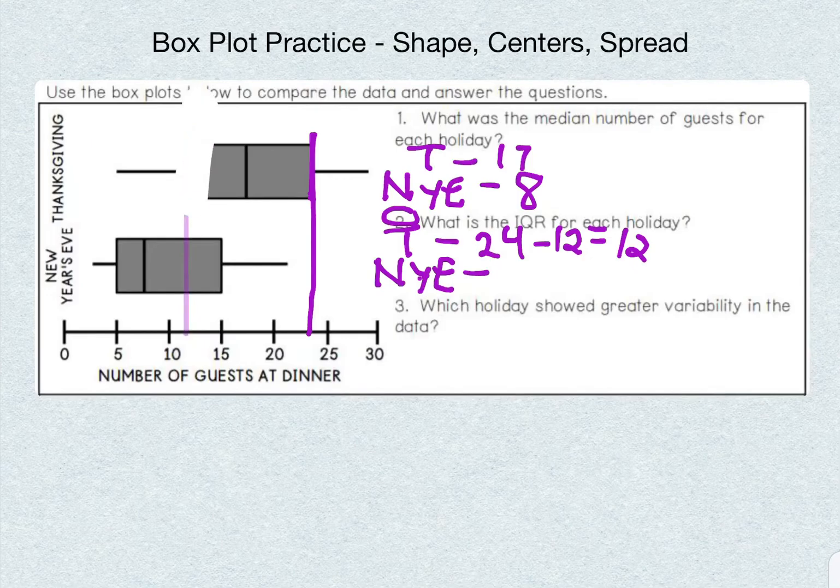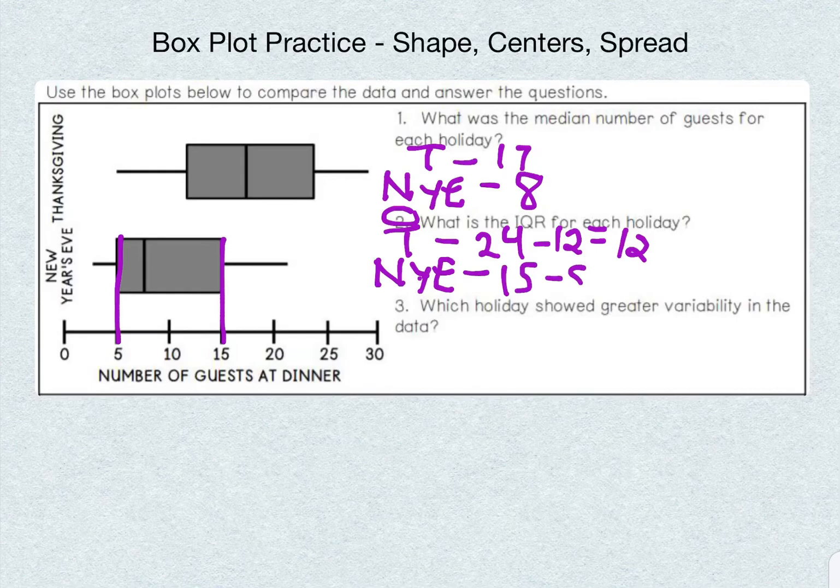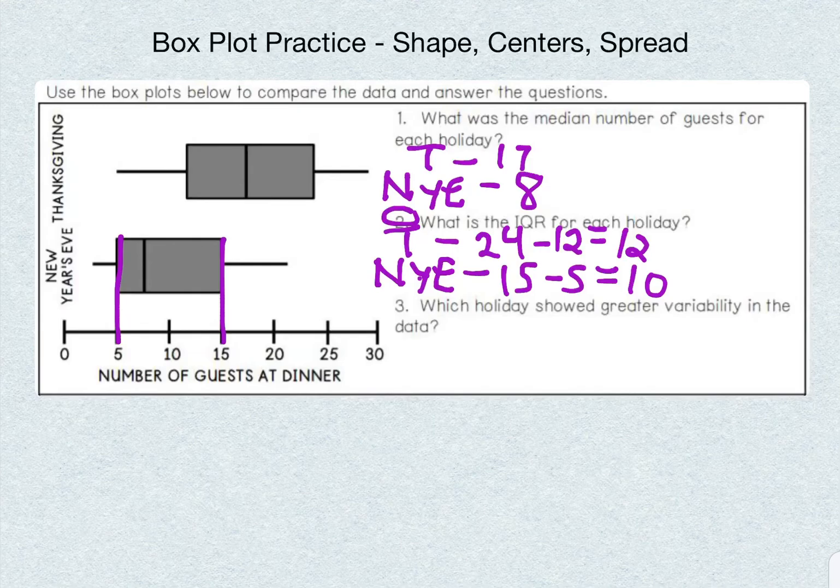Now for New Year's Eve. For New Year's Eve, we have 5 and 15 right on the line. So 15 minus 5 equals 10. So our interquartile range for New Year's Eve is 10.